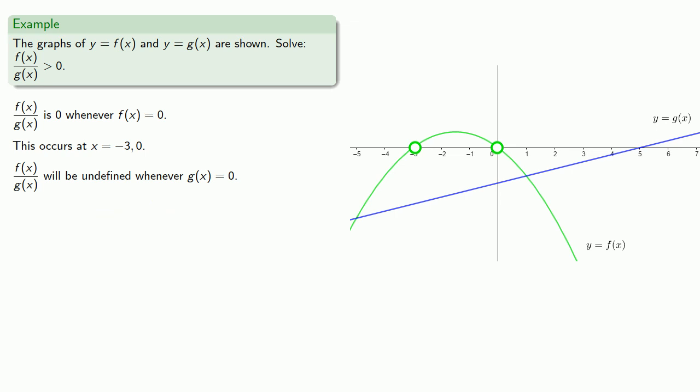On the graph of y equals g of x, this occurs when y is equal to zero. And that will be here at the x-intercept, which is where x is equal to five.